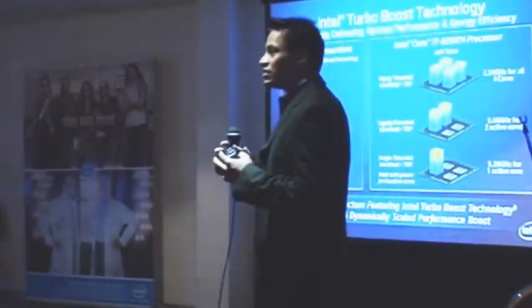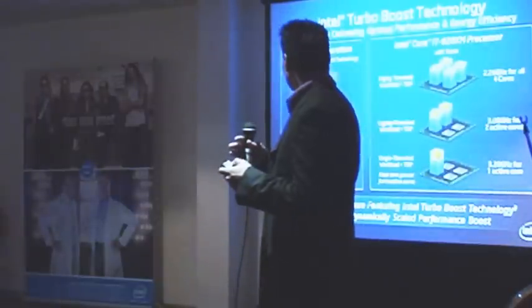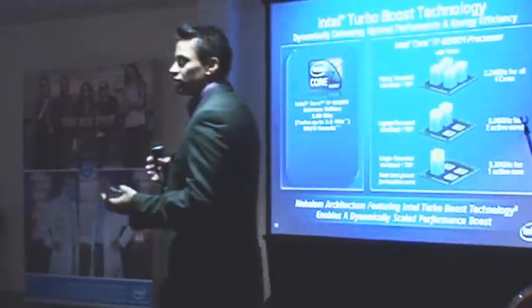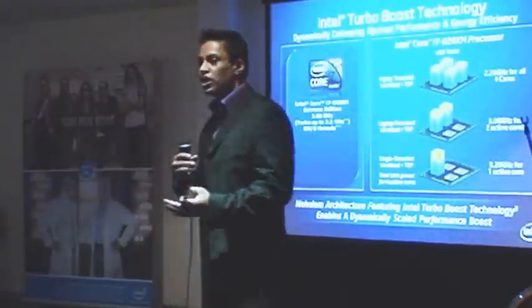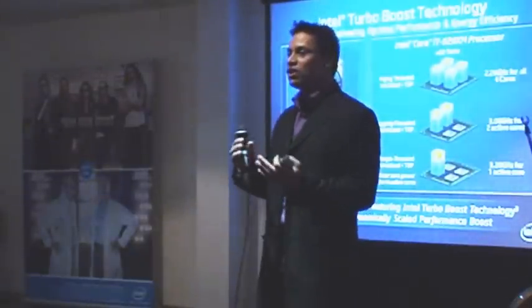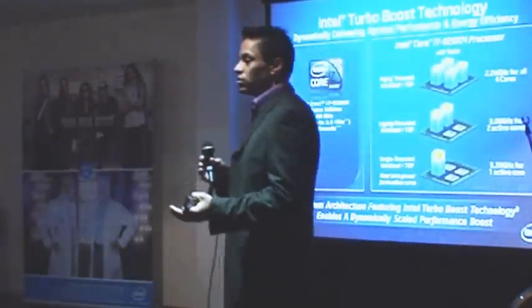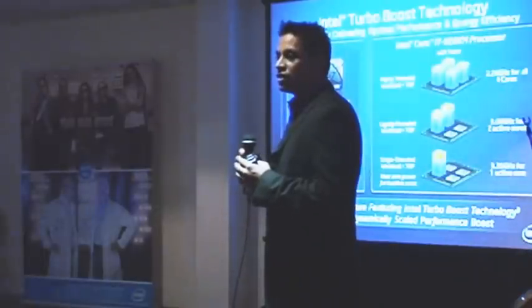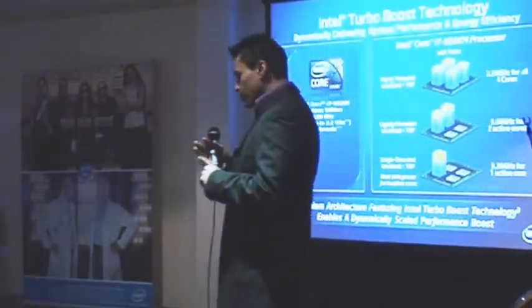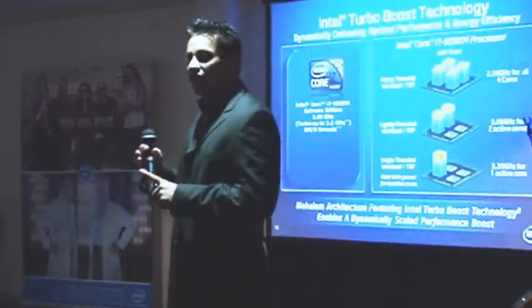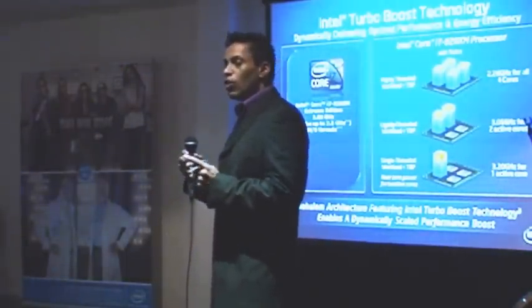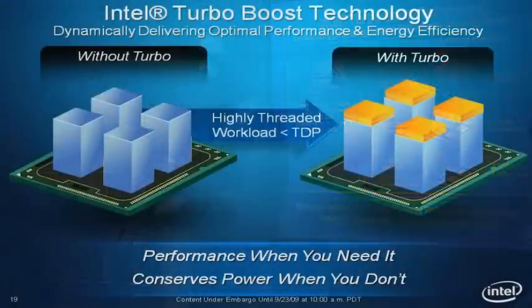Turbo mode allows you to turn off cores when you don't need them. For example, if your workload isn't heavy — like checking mail or reading the news — you don't need all four cores active. Your computer would turn off two or three cores and put them in a near-zero power state. This improves power efficiency and gives more performance to the active core. The more cores turned off, the more bins available on the remaining cores.